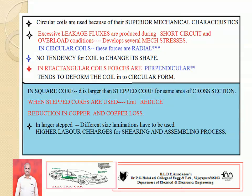In a square core, the diameter of the circumscribing circle D is larger than that of a stepped core of the same cross-sectional area. The area of the circumscribing circle is π D² / 4. In stepped type of cores, the length of mean turn (LMT) of winding reduces. As the LMT reduces, the requirement of copper reduces, and therefore copper loss also reduces, which increases the efficiency and performance of the transformer.